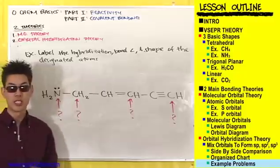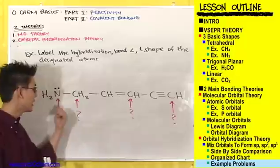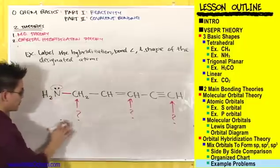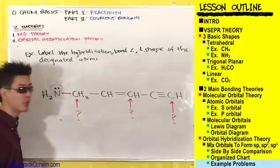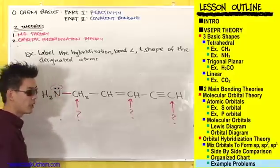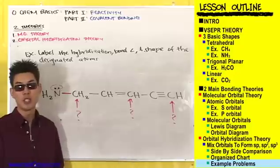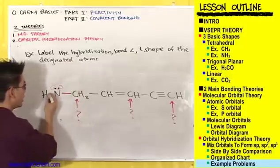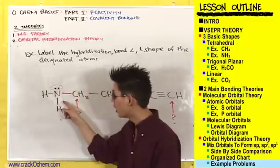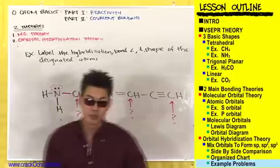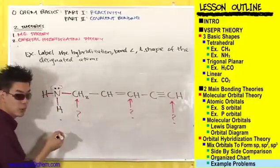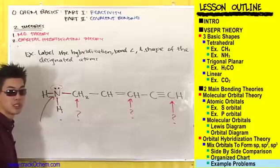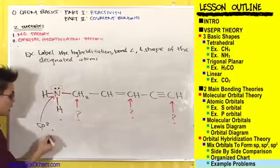Let's look at this nitrogen first — identify how many sigma bonds and lone pairs it has. It has a lone pair and a sigma bond here, but it's also connected to two hydrogens. Don't just count one sigma bond and one lone pair and conclude it's linear at 180 degrees. You must account for the two hydrogens, giving a total of three sigma bonds plus one lone pair — a combination of four, making it sp3 and tetrahedral with bond angles of 109 degrees.